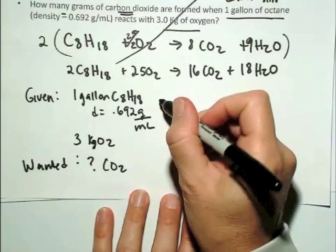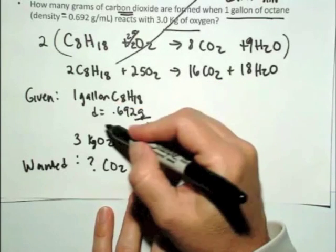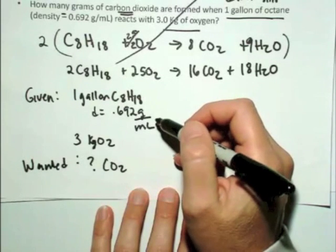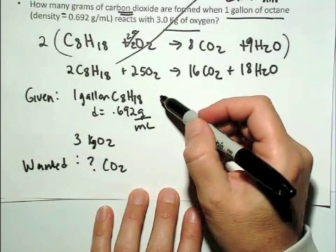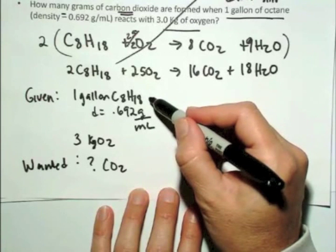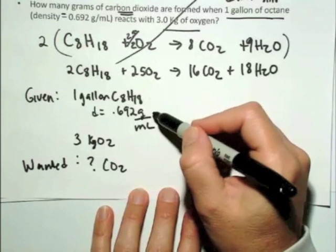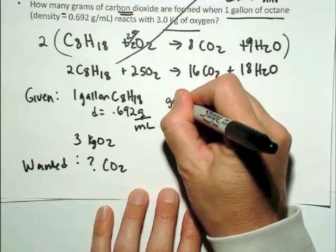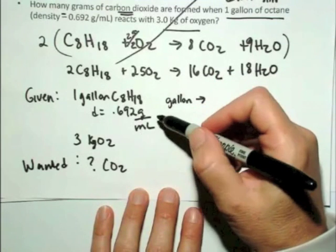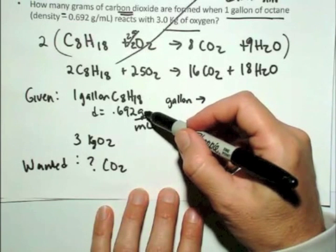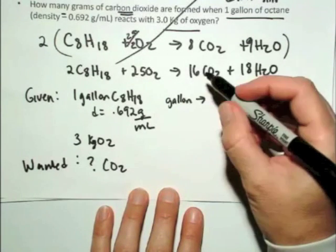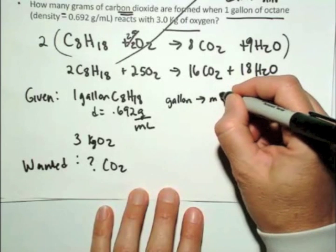Alright, so first of all, for the octane, they didn't tell us the mass, they gave us the volume in a gallon and they also gave us the density in units of grams per milliliter. So what did you all do? Were you stuck there? What you needed to recognize is that you need to figure out the number of moles of octane and so if you're given gallons, you've got to figure out how can you get from gallons to moles. Well, you have a conversion factor between volume and mass and you know once you get to mass and grams you can always get to moles.